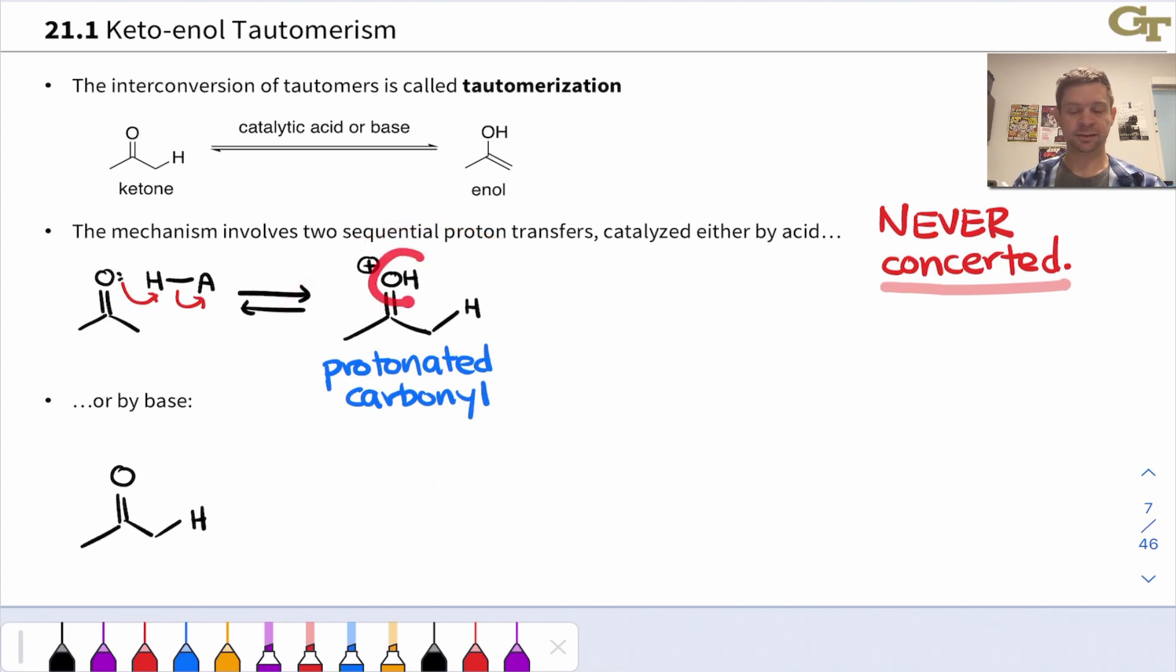The acid, whatever it may be (I've just represented it generically as HA), will protonate the carbonyl oxygen to produce a protonated carbonyl intermediate. Notice this places the enol proton on the carbonyl oxygen, so we're sort of halfway there. What needs to happen now is deprotonation at the alpha position and a resonance-type shift of electrons to get to the neutral enol structure. That's what happens next. The conjugate base of the acid deprotonates at the alpha position, and we end up with the enol and we're back to HA, showing this is an acid-catalyzed process.